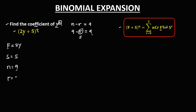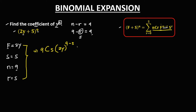So r is equal to 5. To find the coefficient of y to the power 4, substitute all the values into this formula. We have n choose r, that's 9 choose 5, times the first term 2y to the power n minus r — so 9 minus 5 — times the second term, positive 5, to the power r, which is 5.